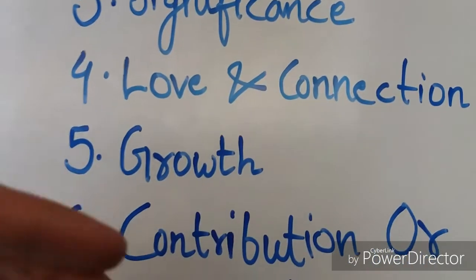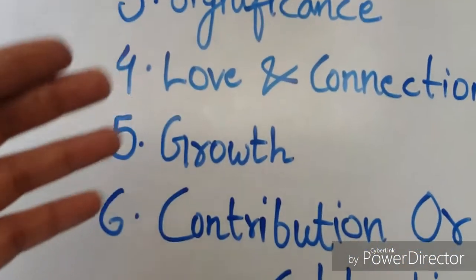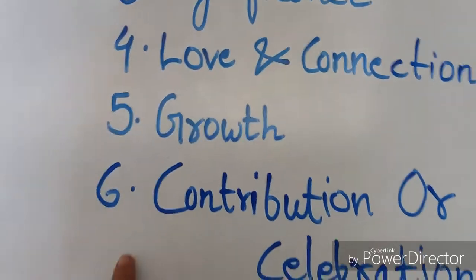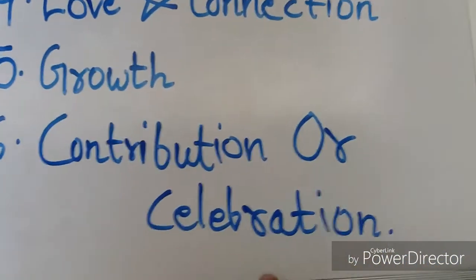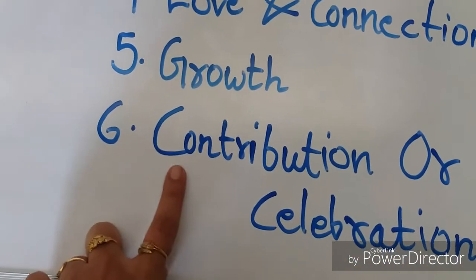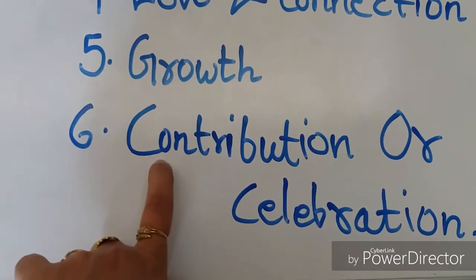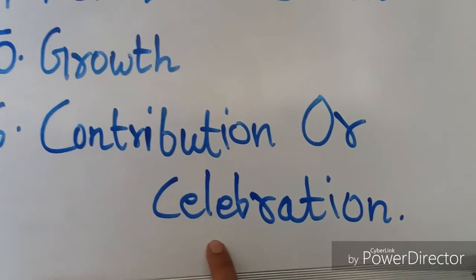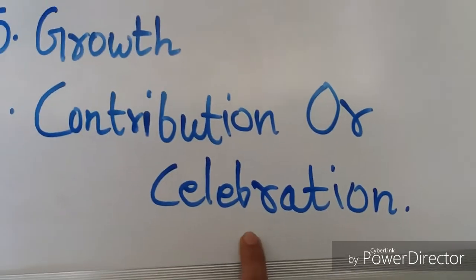They constantly want some or the other things out of their life. Then sixth is contribution or celebration. Some people live for society. They just want to give something to the society, or they just want to celebrate their life.